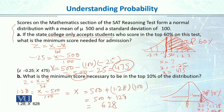So Z equals 1.28 and X equals 628. A university is using SAT scores for admission and only accepts the top 60%, so the lowest acceptable score is 475. And if the college gives scholarships to the top 10%, the minimum score needed for the scholarship is 628. Isn't that cool?